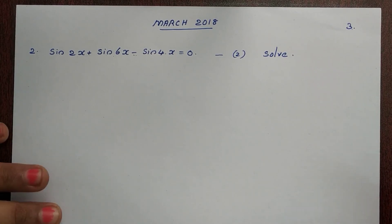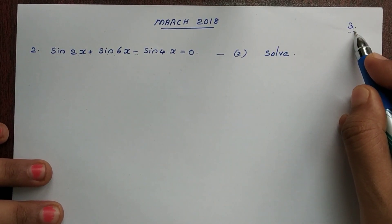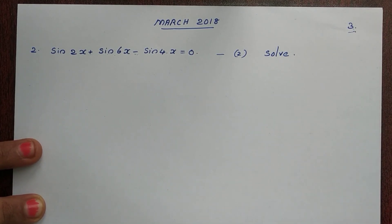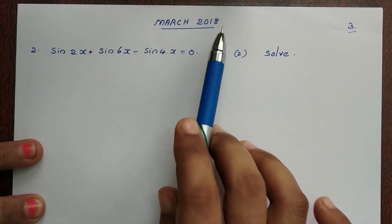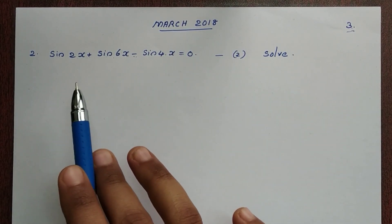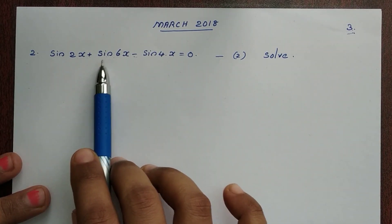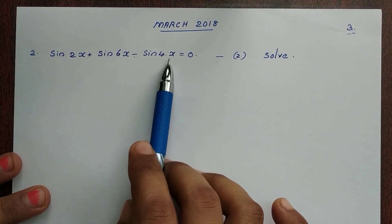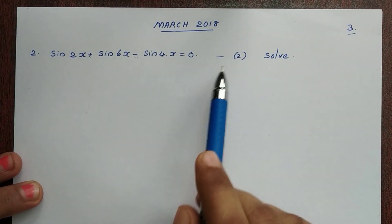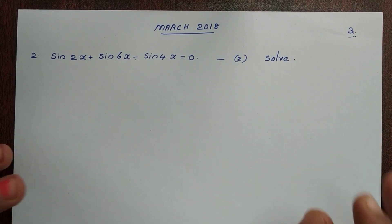Hi everyone. In the 3rd chapter, we will discuss the questions from the previous year. I will discuss the questions from March 2018. That is the second question — trigonometric functions. The equation is: sin2x plus sin6x minus sin4x is equal to 0. This is a two-mark problem. Now we will see how to solve it.